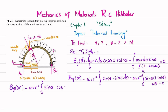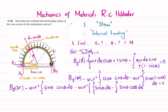Expanding and simplifying, we get: B_y × 2R − w₀R² ∫₀^π sin θ cos θ dθ − w₀R² ∫₀^π sin θ dθ + w₀R² ∫₀^π sin θ cos θ dθ = 0.